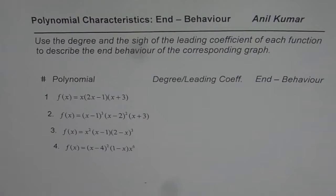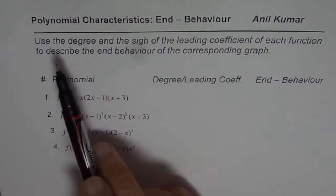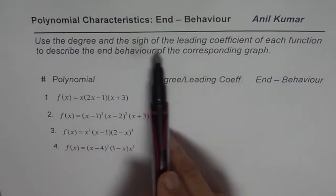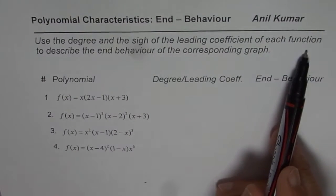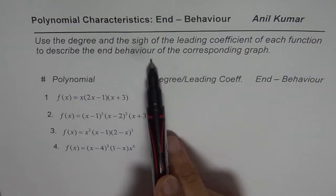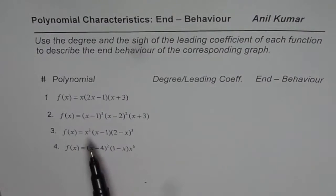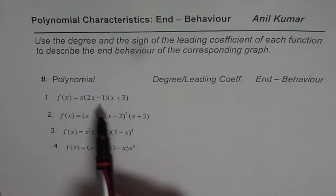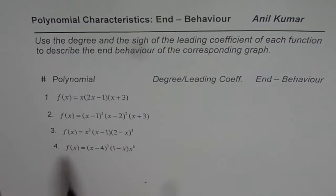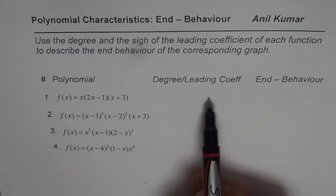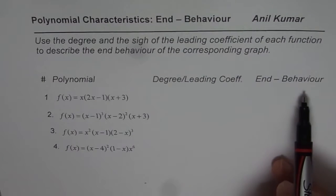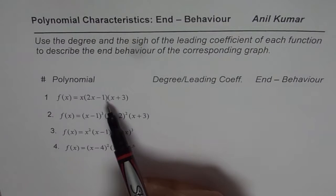I'm Anil Kumar and in this video we'll try to understand end behavior from a given polynomial function. The question is: use the degree and the sign of the leading coefficient of each function to describe the end behavior of the corresponding graph. We have four examples, written in factored form, and we need to find the degree and leading coefficient to determine end behavior.